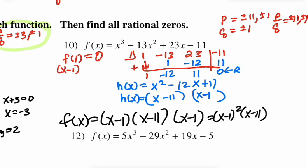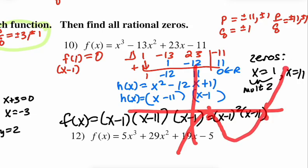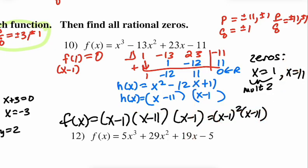So f(x) factors as (x minus 1) squared times (x minus 11). We have a 1 that repeats again with a multiplicity of 2, and a zero at positive 11 with no multiplicity — we go straight through at 11. So if this is 1 and this is 11, we bounce off of 1 but go through 11. You can see how quickly we're able to draw the graph of something like that using this skill.